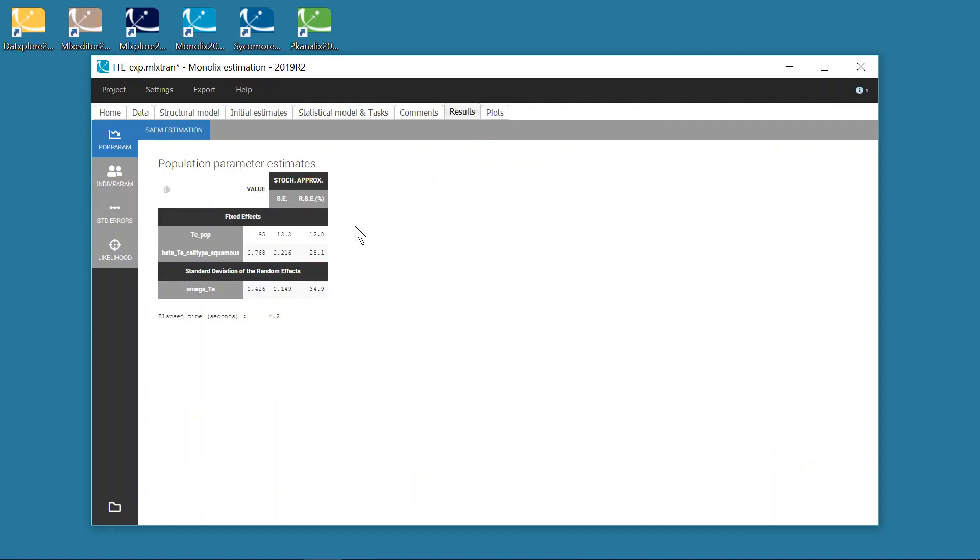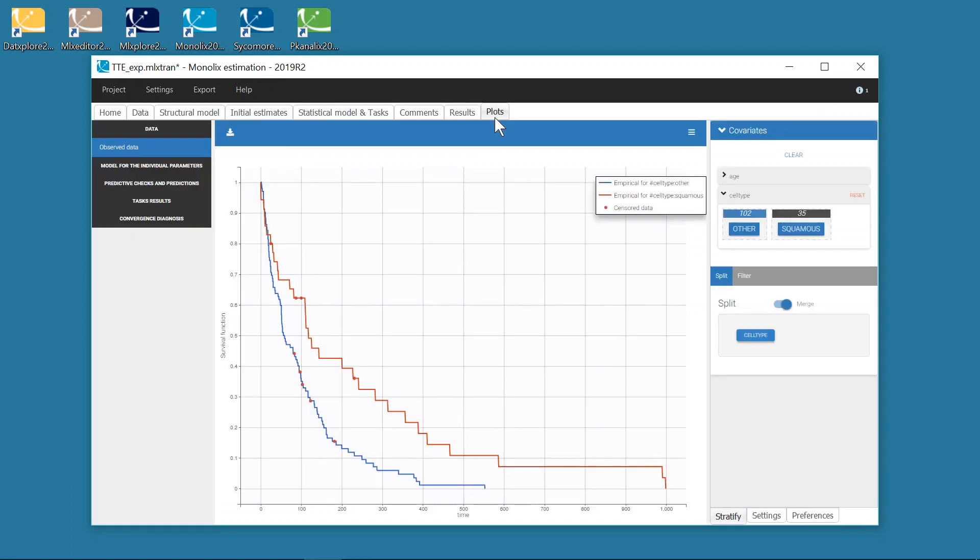For example, I can check that all parameters have been estimated with reasonable confidence. In the diagnostic plot, there is no individual fits or observation versus predictions. The main diagnostic plot is the VPC.